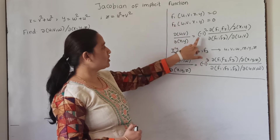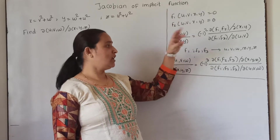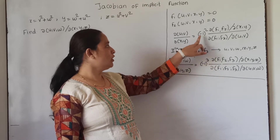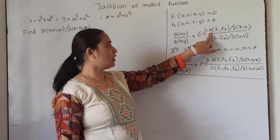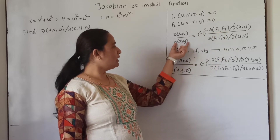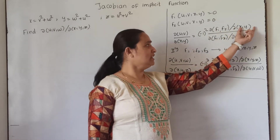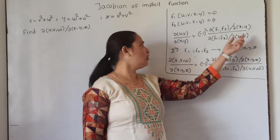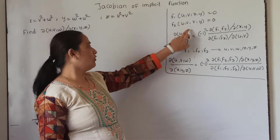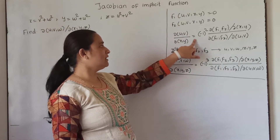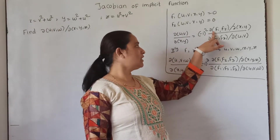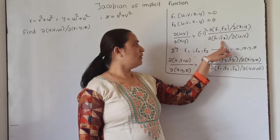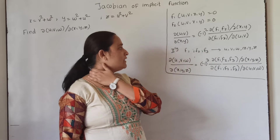Since we have two functions, we will multiply by the factor minus 1 squared. If we have three functions, we multiply by minus 1 cubed. The formula is: Jacobian of uv with respect to xy equals minus 1 squared times Jacobian of f1, f2 with respect to xy, upon Jacobian of f1, f2 with respect to uv.